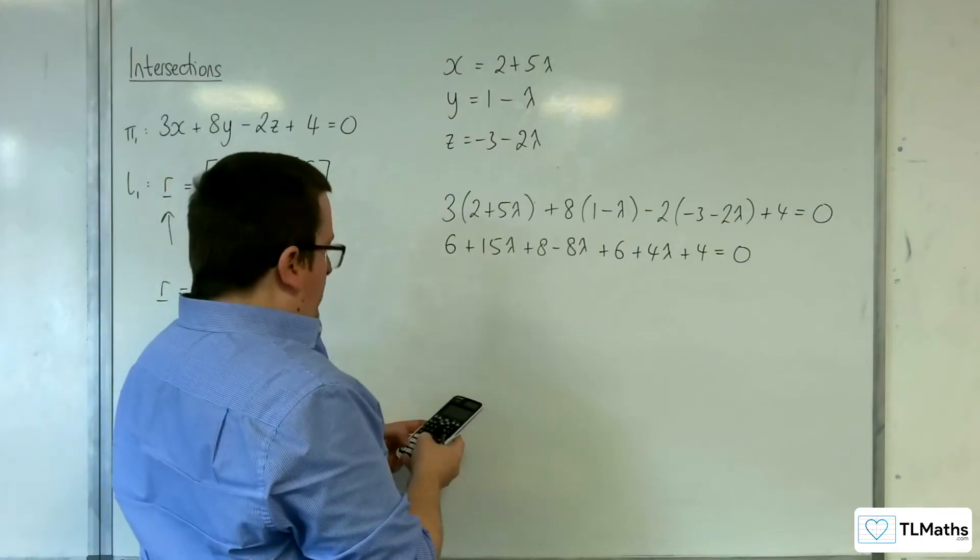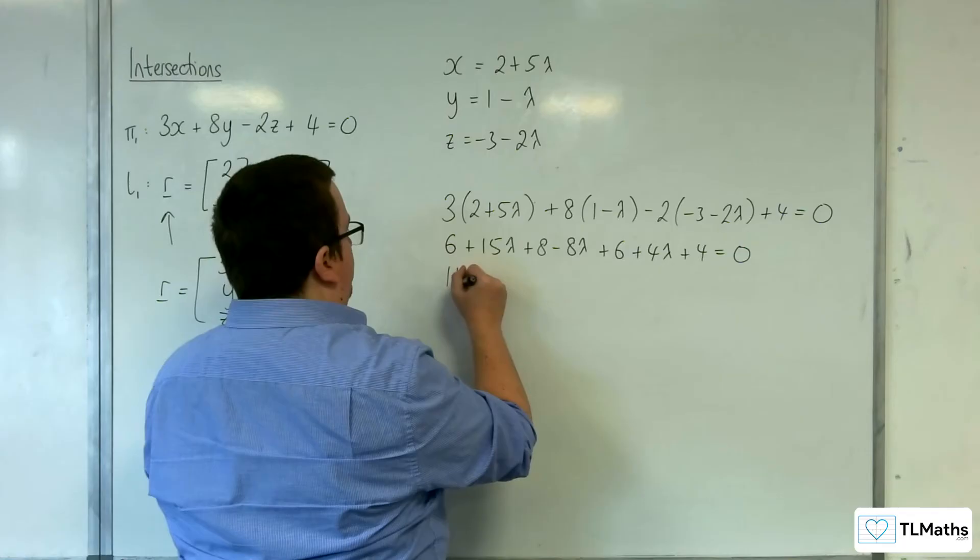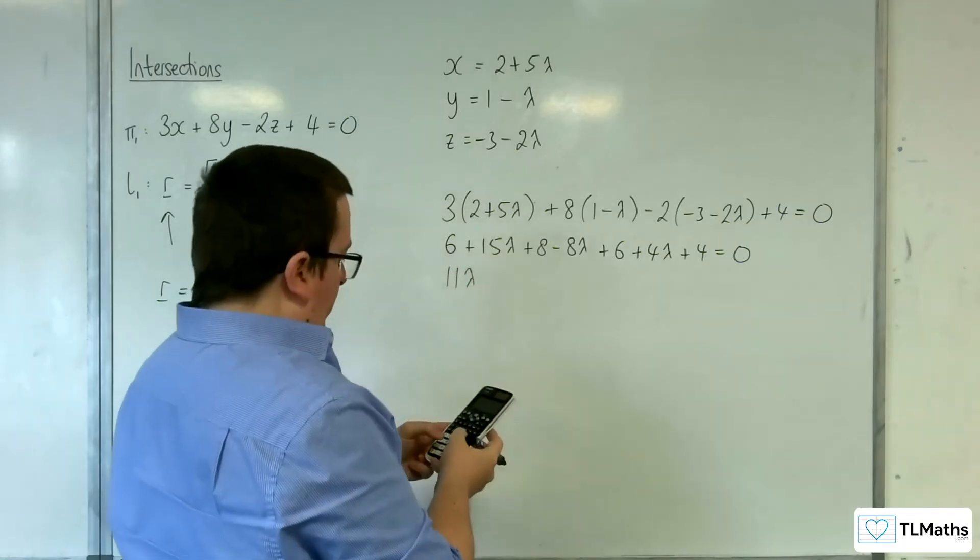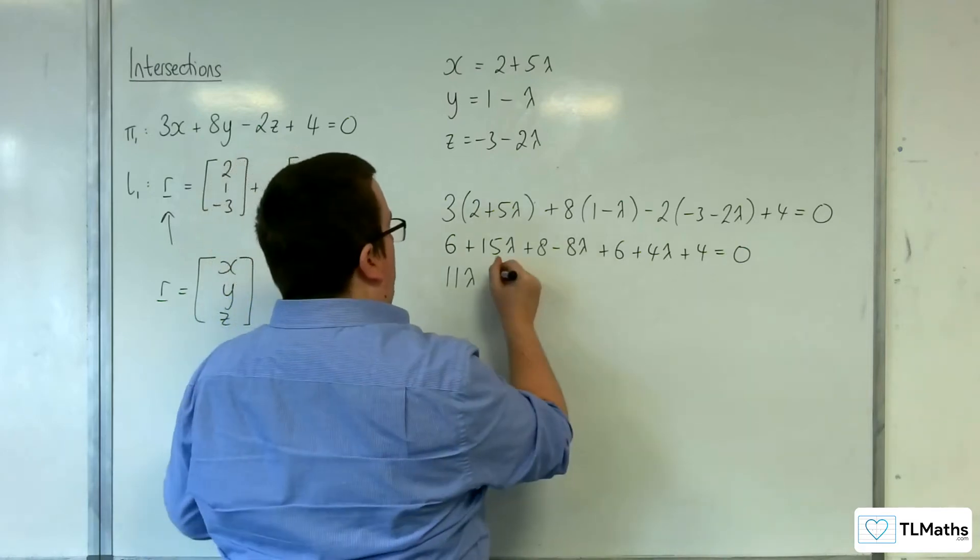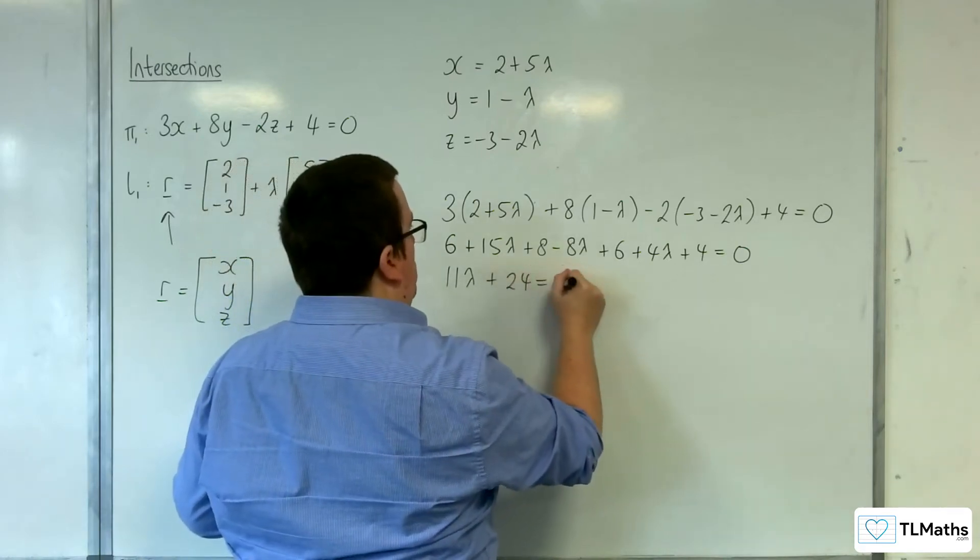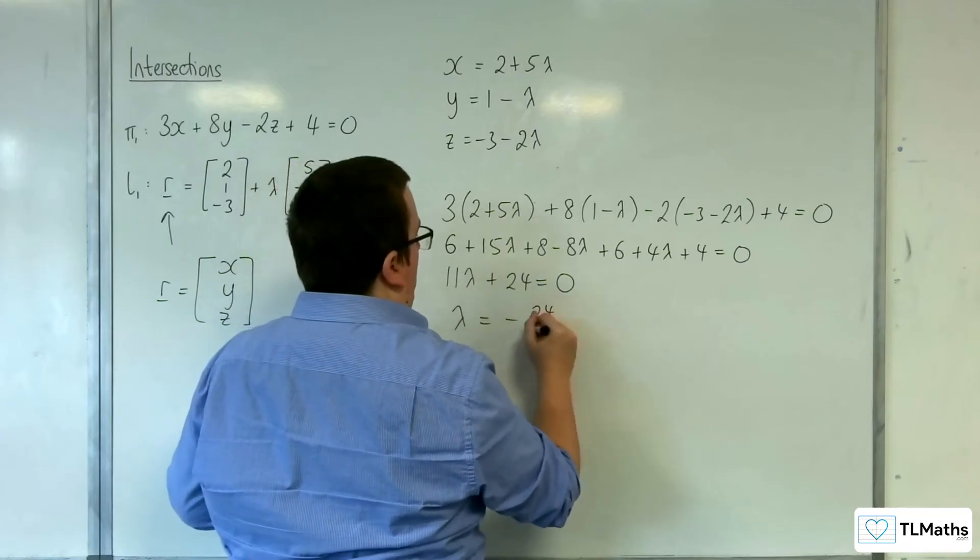So what we've got, 15 take away 8 plus 4, so 11 lambda. And we've got 6 plus 8 plus 6 plus 4, so plus 24 equals 0. So lambda is going to be equal to minus 24 over 11.